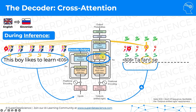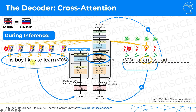As a result, we get output probabilities for every word in the target language — imagine all words in the Slovene language, every word gets a probability. The transformer picks the one with the highest probability and that's our next word. That's how this cross-attention mechanism works.